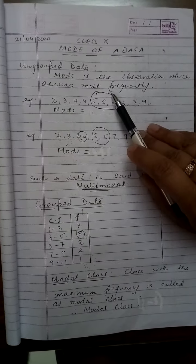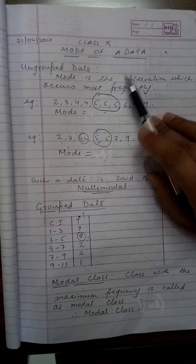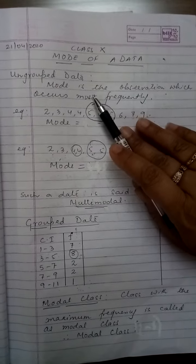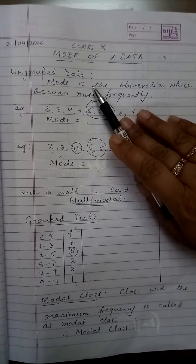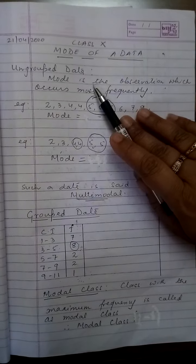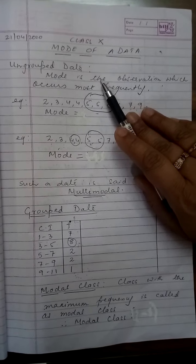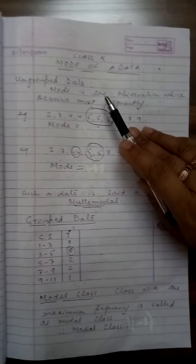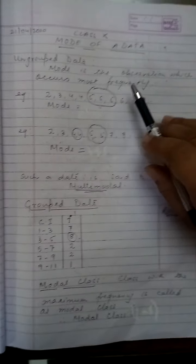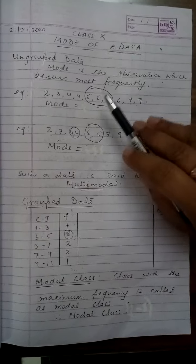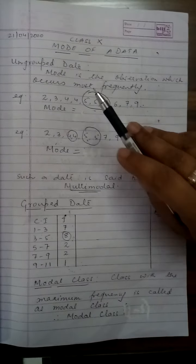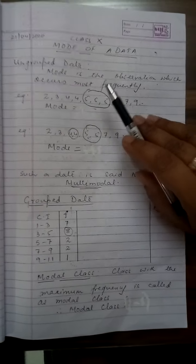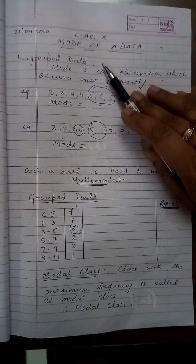This is Prabha Varma here again with my next video. In my previous videos we have already discussed how to find out the first measure of central tendency that is mean by the direct method, the assumed mean method and the step deviation method. Today we move on to the second measure of central tendency that is mode of a given data.